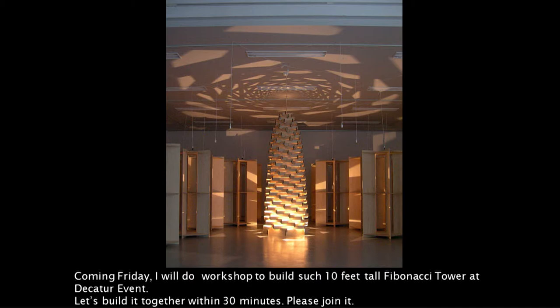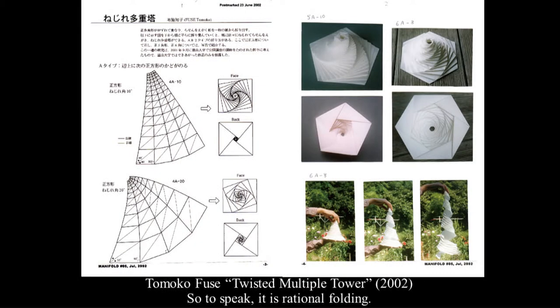This is Tomoko Fuse's origami work, called the Twisted Multiple Tower. To speak, it is a rational folding because there is a regular pentagon, regular octagon, and regular square.